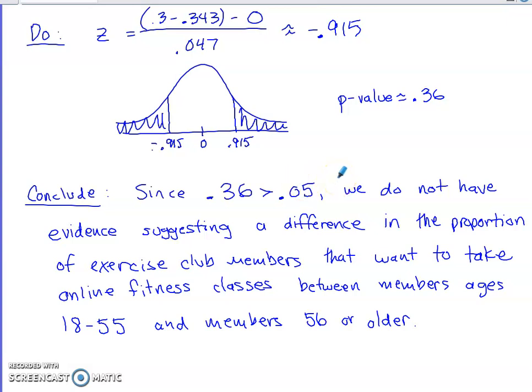Clearly since 0.36 exceeds our significance level, we are not in a situation where we have evidence to reject the null hypothesis. So we do not have evidence suggesting that we should side with the alternative. You want to make sure that you use phrasing that is non-deterministic, right. We haven't necessarily proven anything, we just have the data that was gathered suggesting that we do not have a difference in the proportion of younger exercise club members that want to take an online fitness class compared to the older age group. It has to be in context and then again that non-deterministic language has to be used.